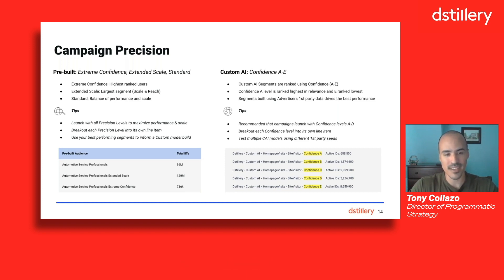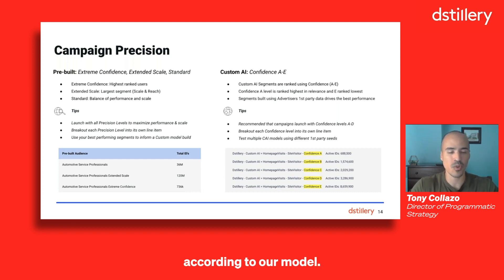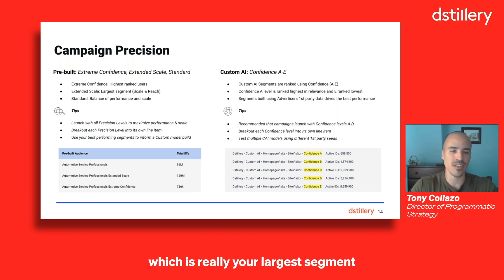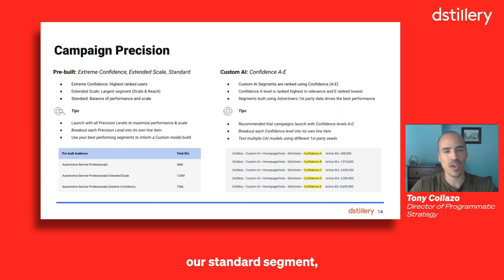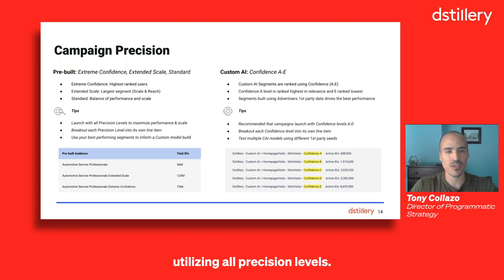Those precision level names are Extreme Confidence, which consists of your highest ranked users according to our model. Then you have Extended Scale, which is really your largest segment utilized for scale and reach. And then you have the Standard Segment, which is a balance between both performance and scale. When you activate against these audiences, it's very important that you start out utilizing all precision levels.